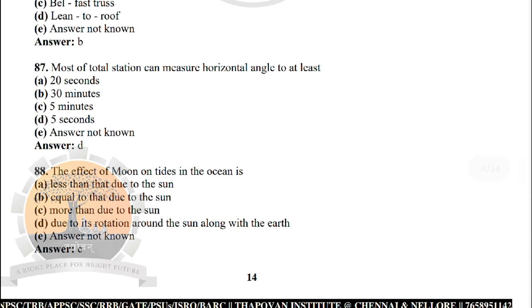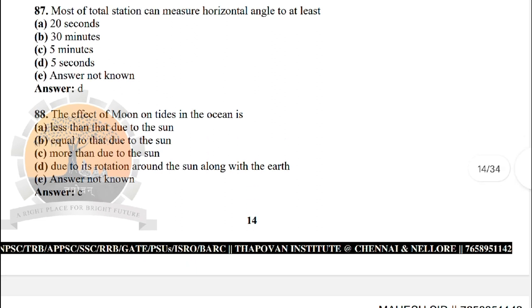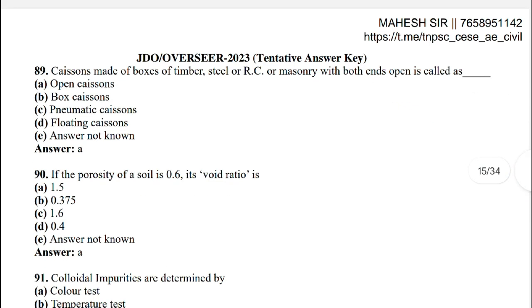Next: in total station, the horizontal angle can be measured to at least — the correct answer is option D: 5 seconds. Next: the effect of the moon on the tides in the ocean is — the correct answer is option C: more than due to the sun.